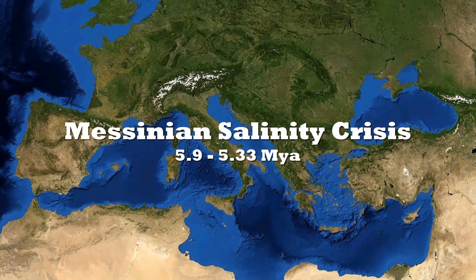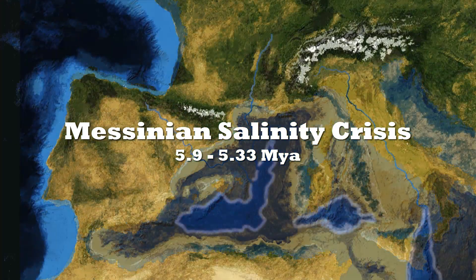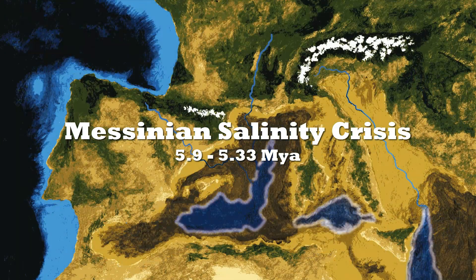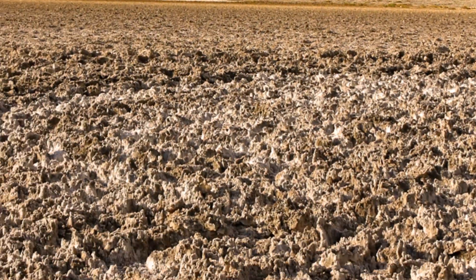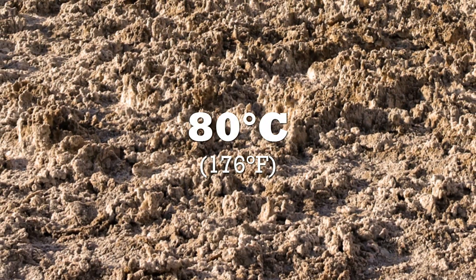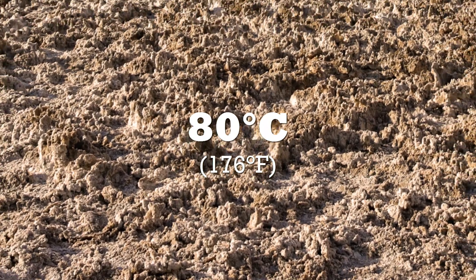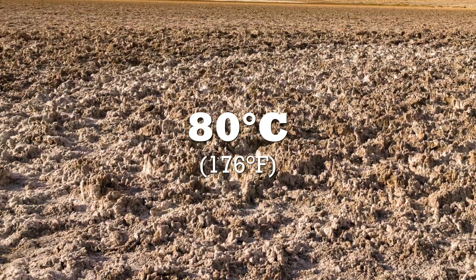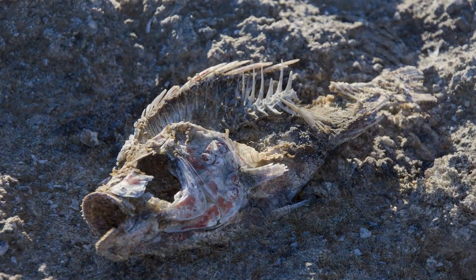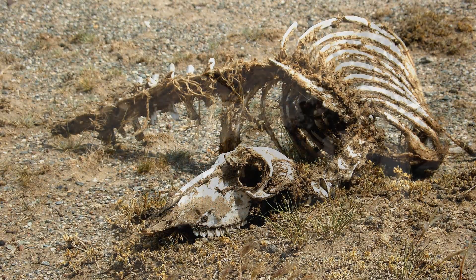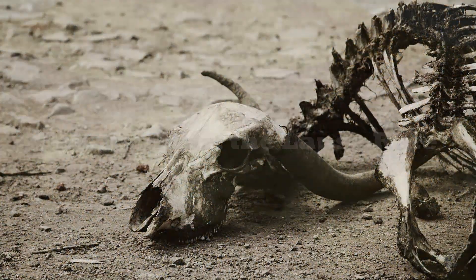During the Messinian salinity crisis, 5.9 to 5.33 million years ago, the Mediterranean was a 3-kilometer-deep desert. At the bottom of that broad valley, the summer temperature was estimated to have been 80 degrees Celsius — that's 176 degrees Fahrenheit. Crossing that desert during the summer would have been virtually impossible, killing everything that attempted that journey.